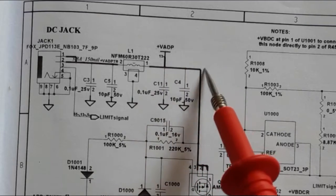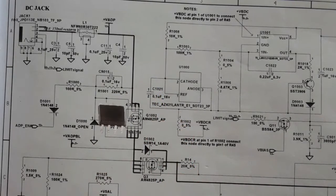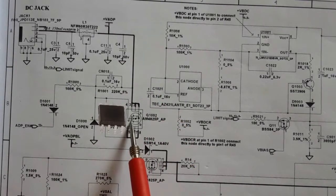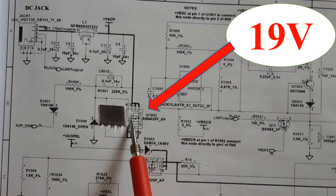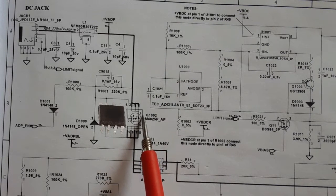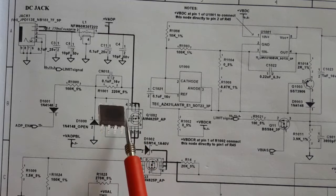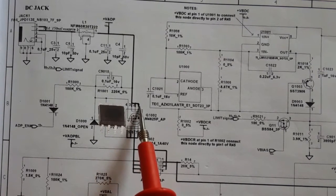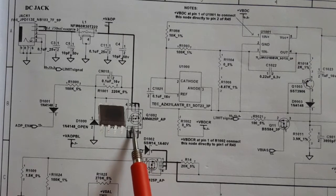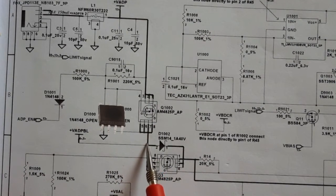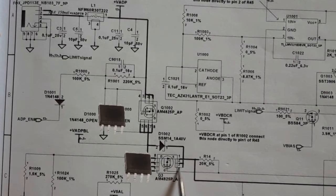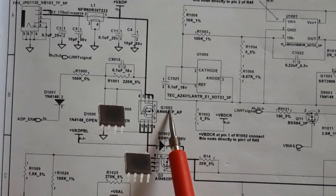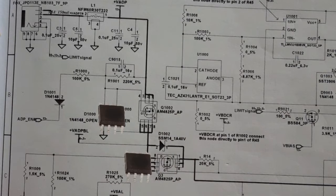The 19 volts then goes directly to the first switch, the first MOSFET Q1002. The source has three pins connected together, and the drain has four pins connected together. The drain of the first MOSFET is connected to the drain of the second MOSFET, Q3.